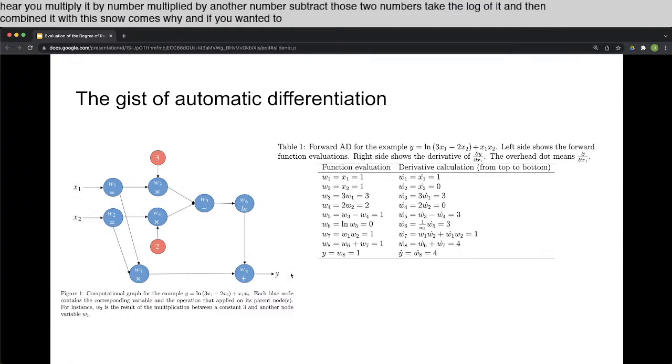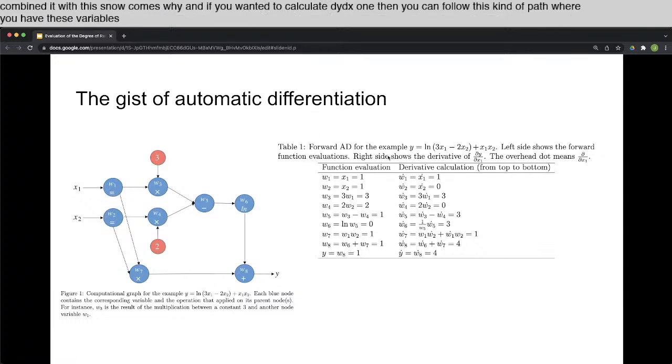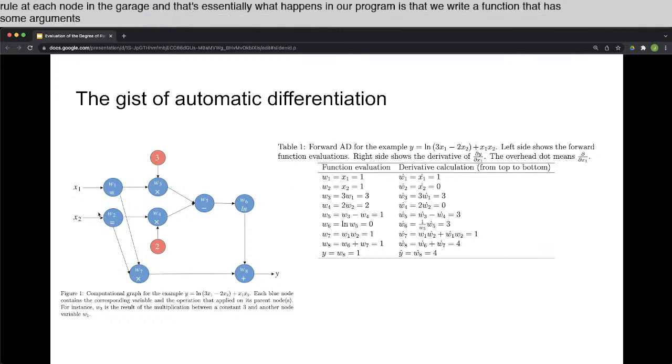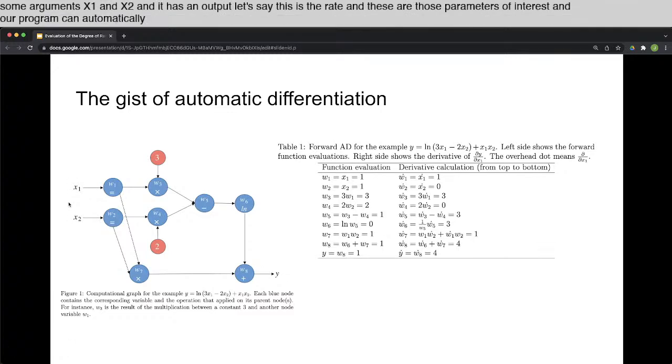And if you wanted to calculate dy/dx1, then you can follow this kind of path where you have these variables, w1 and w2, and you work through what the derivatives of these things are, and you apply the chain rule at each node in the graph. And that's essentially what happens in our program, is that we write a function that has some arguments, x1 and x2, and it has an output y. Let's say this is the rate, and these are those parameters of interest. And our program can automatically calculate the derivative.